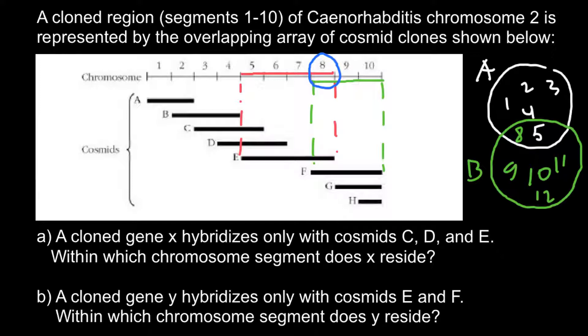In question A, we have a cloned gene X that hybridizes only with cosmids C, D, and E. Within which chromosome segment does X reside? So once again, cosmid C would be between fragments 3 and 5.